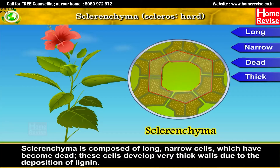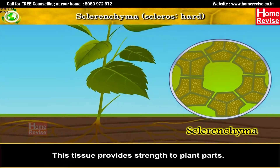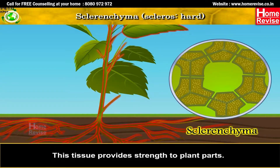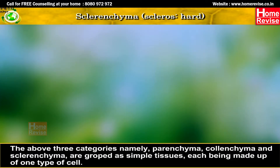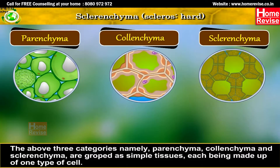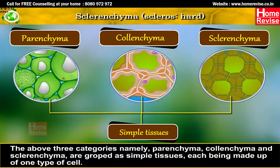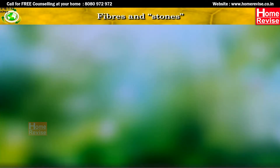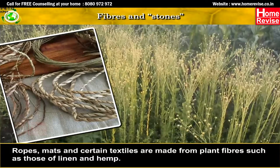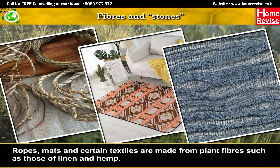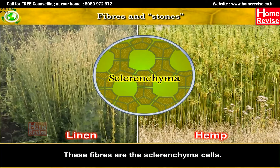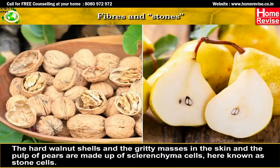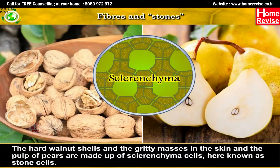Sclerenchyma develops very thick walls due to the deposition of lignin. This tissue provides strength to plant parts and is found in stems and veins of the leaves. Parenchyma, colenchyma and sclerenchyma are grouped as simple tissues, each made up of one type of cell. Ropes, mats and certain textiles are made from plant fibres such as linen and hemp — these fibres are sclerenchyma cells. The hard walnut shells and gritty masses in the skin and pulp of pears are also made up of sclerenchyma cells, here known as stone cells.